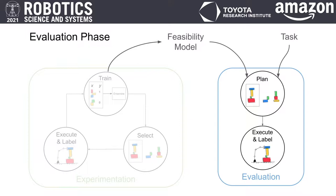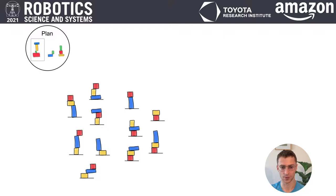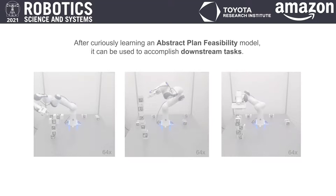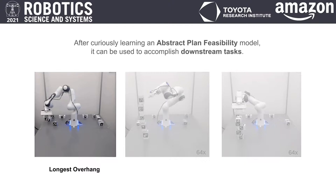After learning a feasibility model by task-agnostic experimentation, we use the model with a Monte Carlo planner to maximize reward in multiple downstream tasks. During evaluations, we sample a set of candidate plans, and from those estimated to be feasible using our model, we select the plan that maximizes task-specific reward for execution. In this paper, we consider three tasks that require the robot to build challenging or unintuitive towers using blocks with shifted centers of mass.